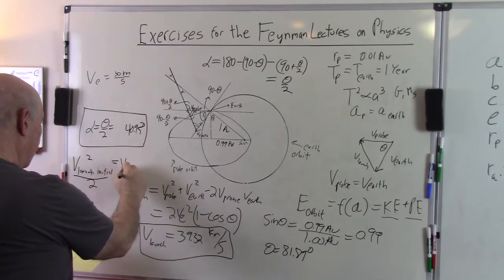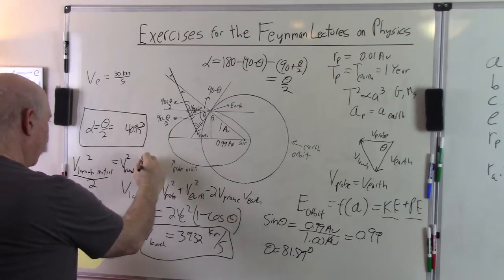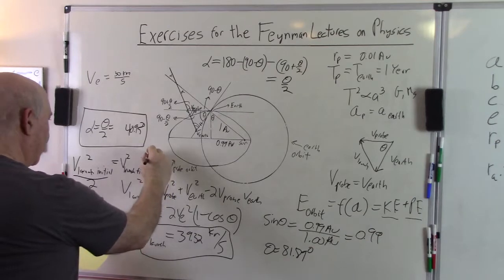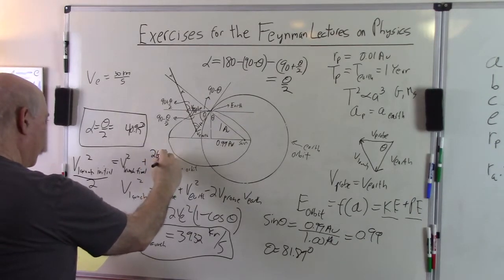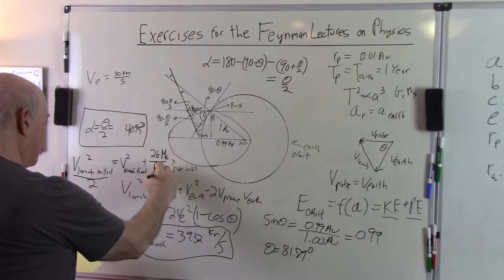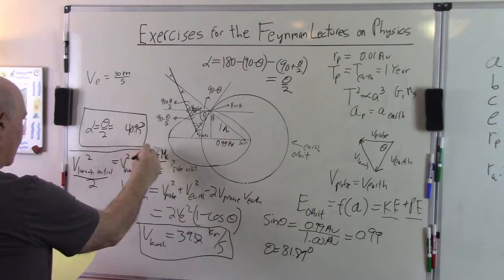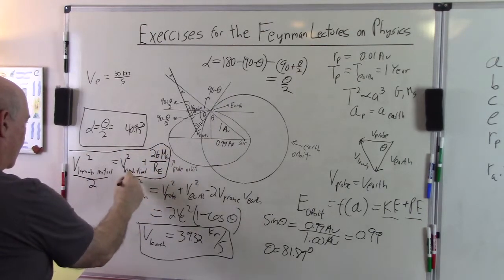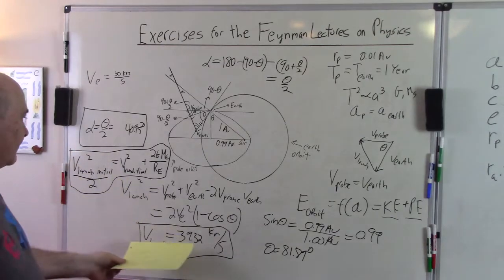we need to have that the initial launch velocity squared over 2 is equal to what I calculated there. We launch, let's call it final squared, and we have to overcome the gravitational potential well of the Earth, 2g mass of the Earth over the radius of the Earth.